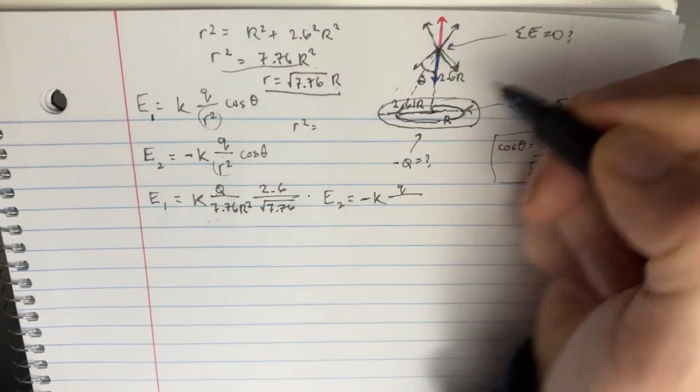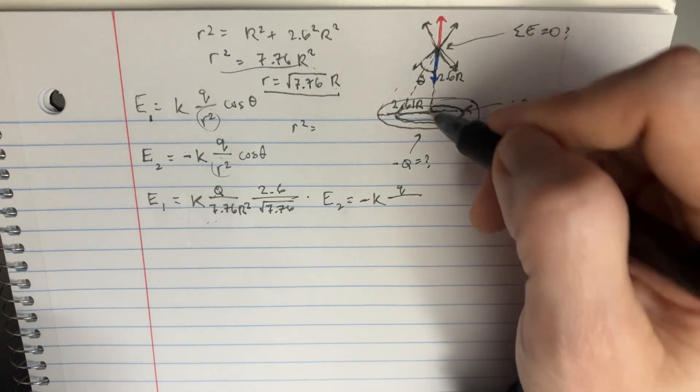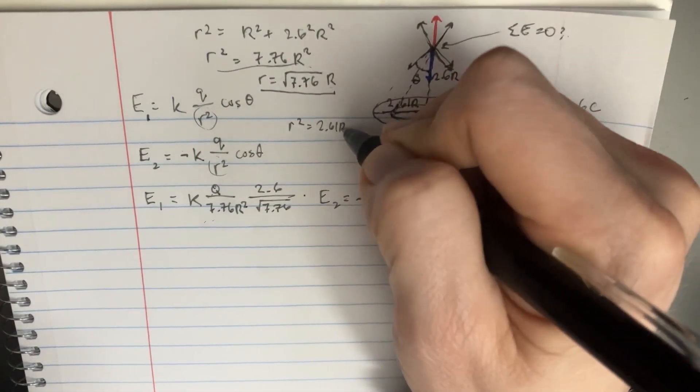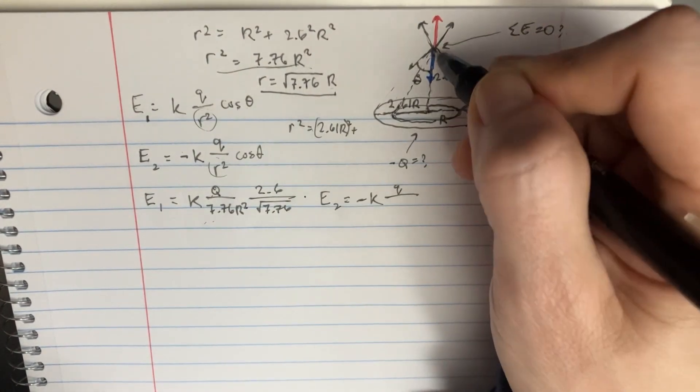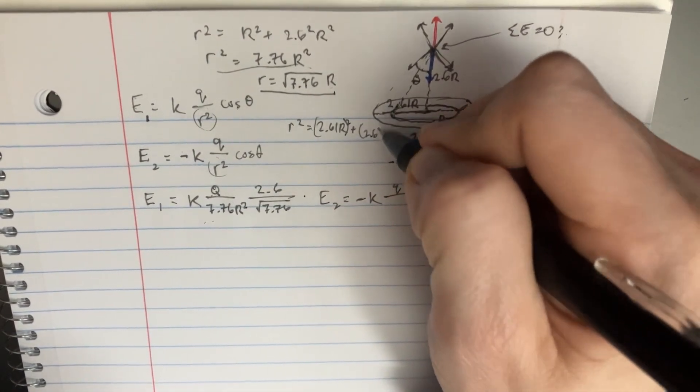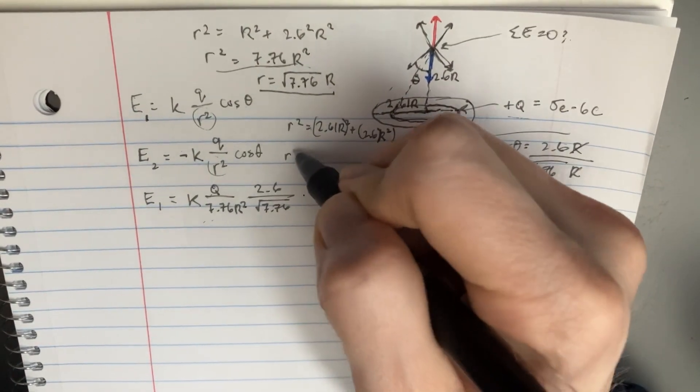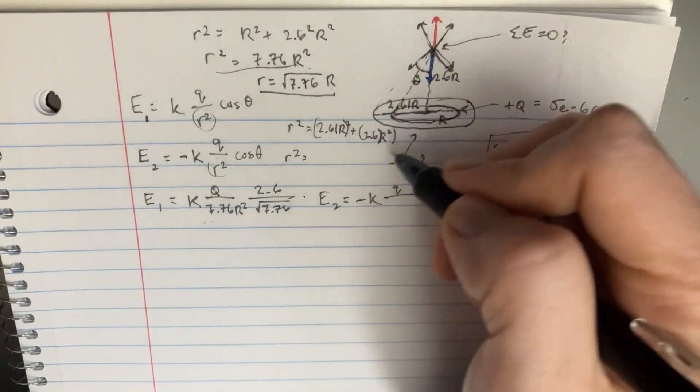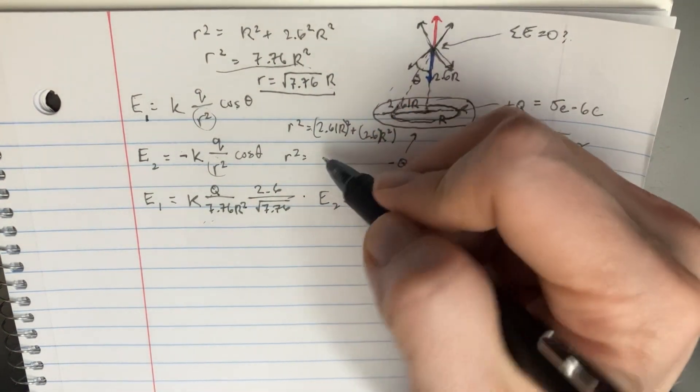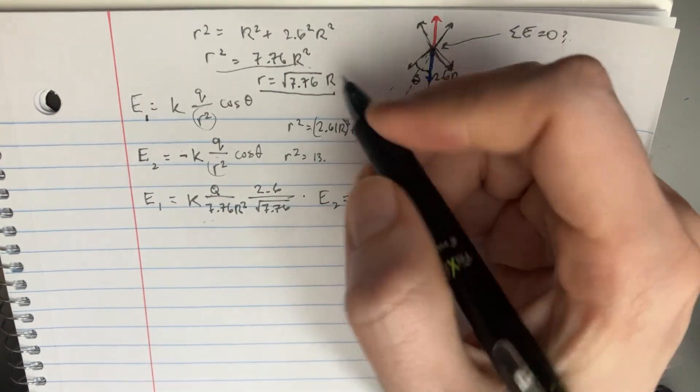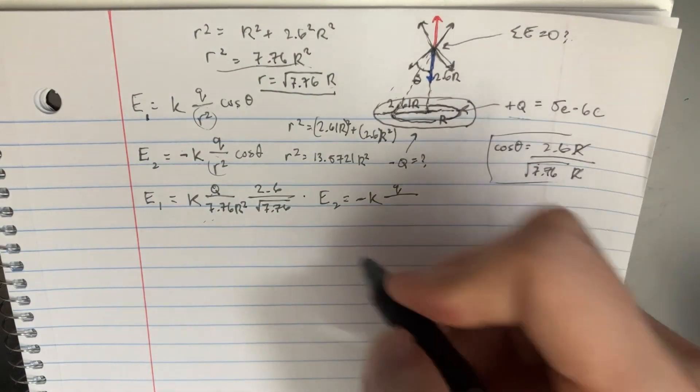r squared in the second case is going to be equal to 2.61 r, 2.61 r squared, in parentheses, plus the regular 2.6 r squared, in parentheses. And if we were to solve for that, r squared is equal to, this will turn out to be 13.5721 r squared, just kind of multiply that out...